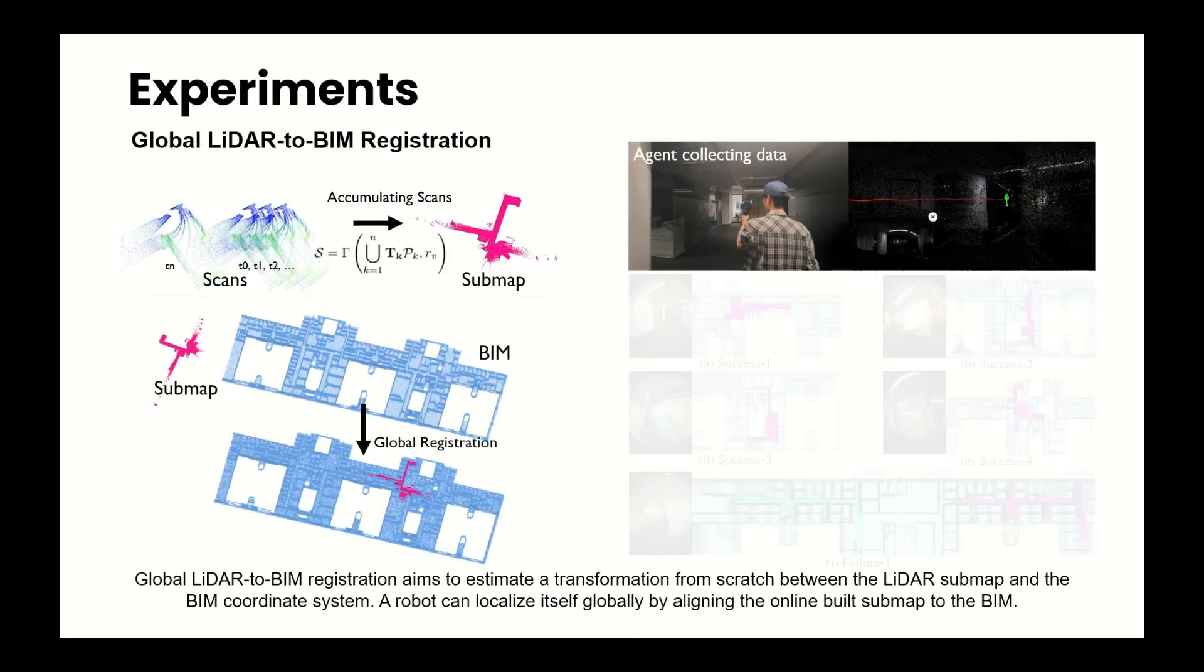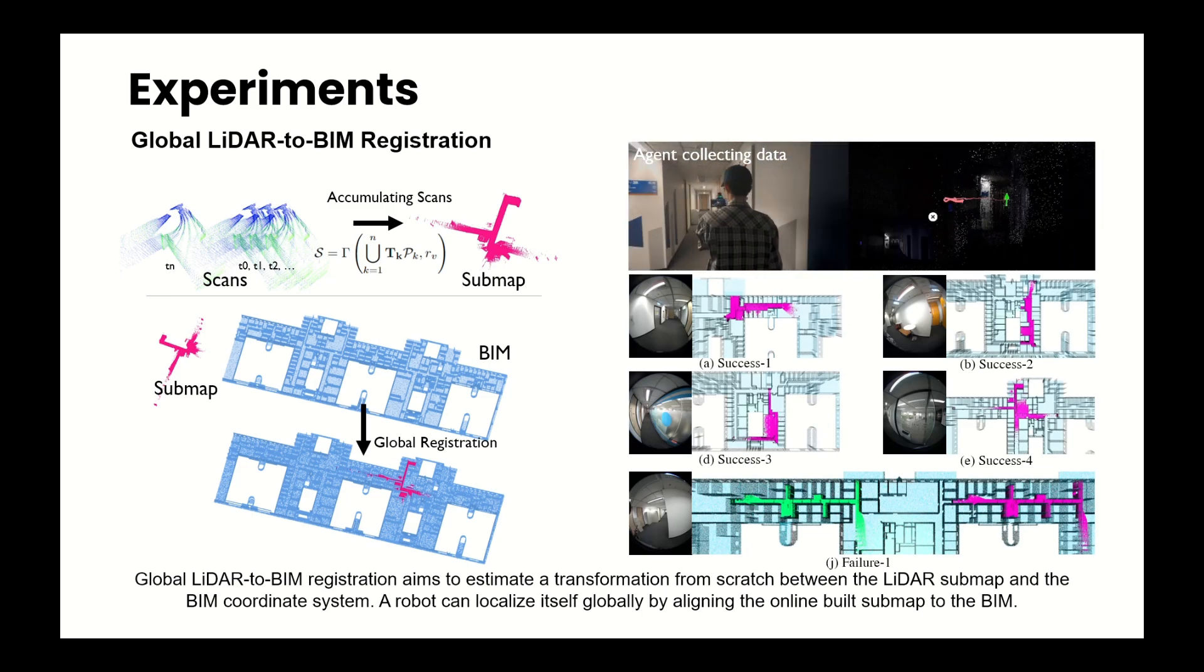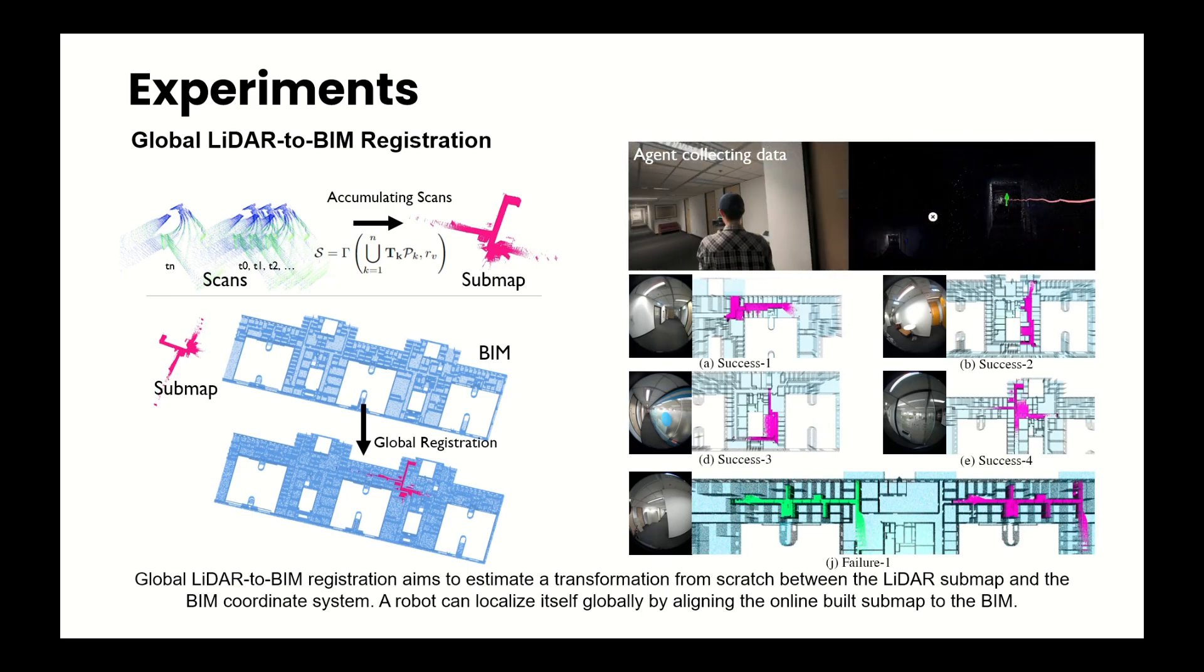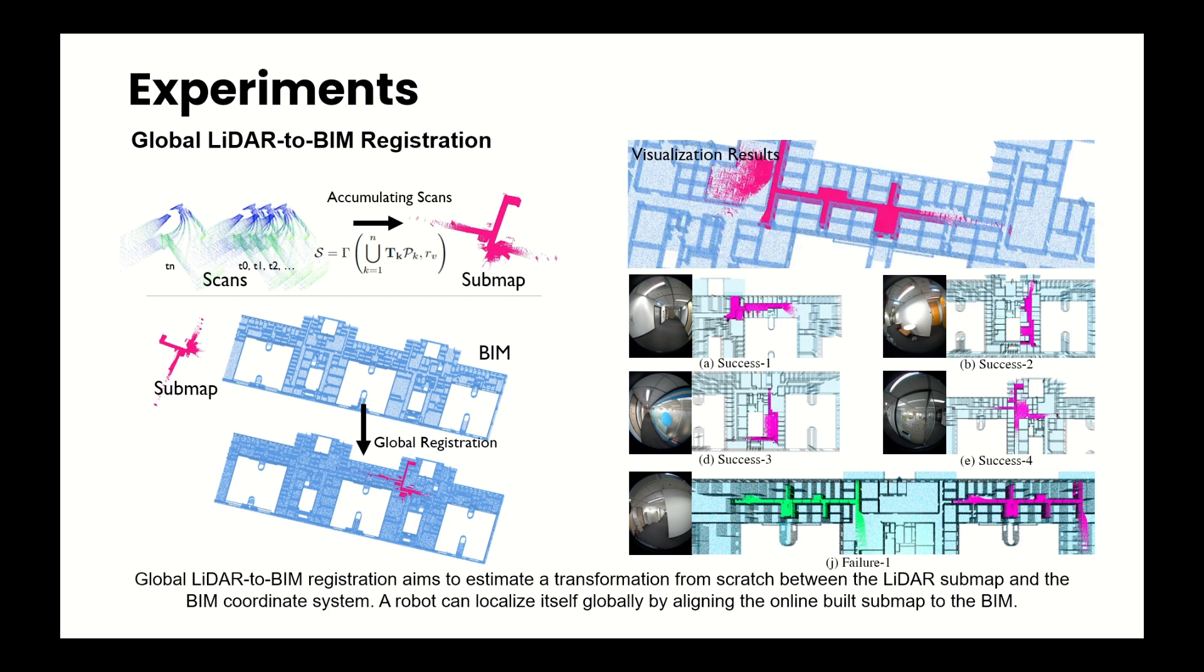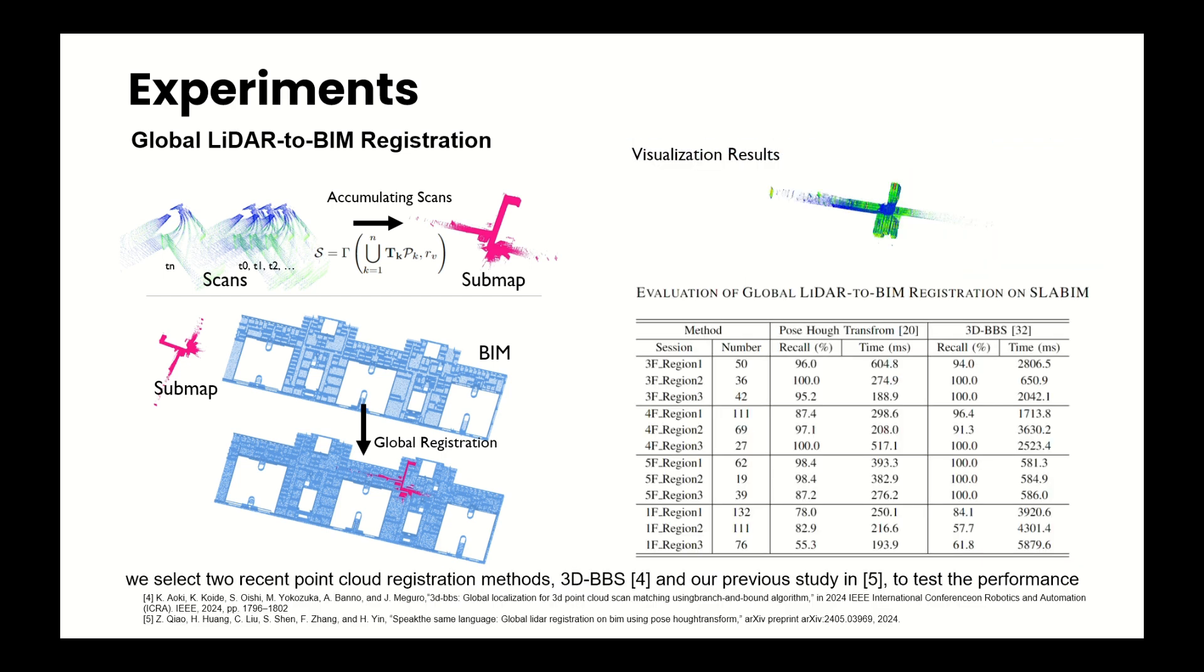Global LiDAR-to-BIM registration aims to estimate a transformation from scratch between the LiDAR submap and the BIM coordinate system. A robot can localize itself globally by aligning the online-built submap to the BIM. We select two recent point cloud registration methods to test the performance.